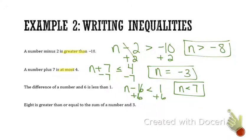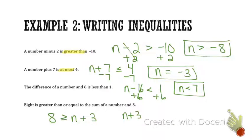One more: 8 is greater than or equal to the sum of a number and 3. I have to write it in the order I'm reading — so it starts with 8, then the symbol, and the sum of a number and 3. When the variable comes second, we rewrite it: take n plus 3, and the symbol has to stay facing the same direction — closed off towards the n. Now it's just one step, and n is less than or equal to 5.